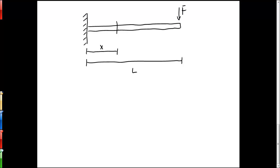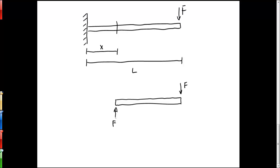To do that, we cut our beam at position x and take what's left over and draw a free body diagram. Because the beam is statically loaded — not moving or accelerating — the sum of the forces must balance. Since we're applying only one external force F, the other forces must arise at the cut of the beam, where the internal forces react against the external applied force F.